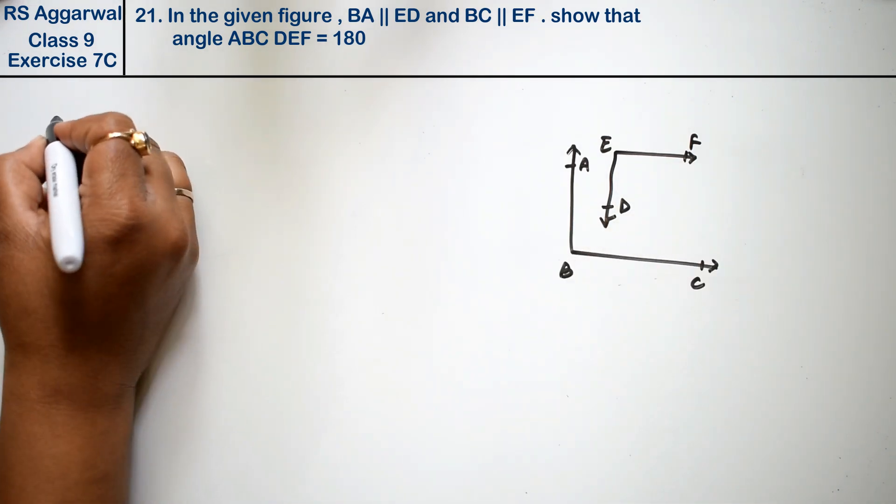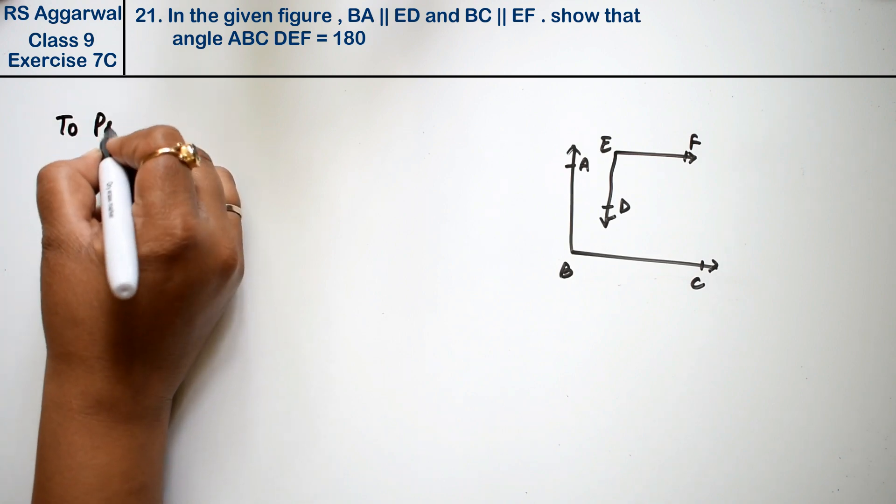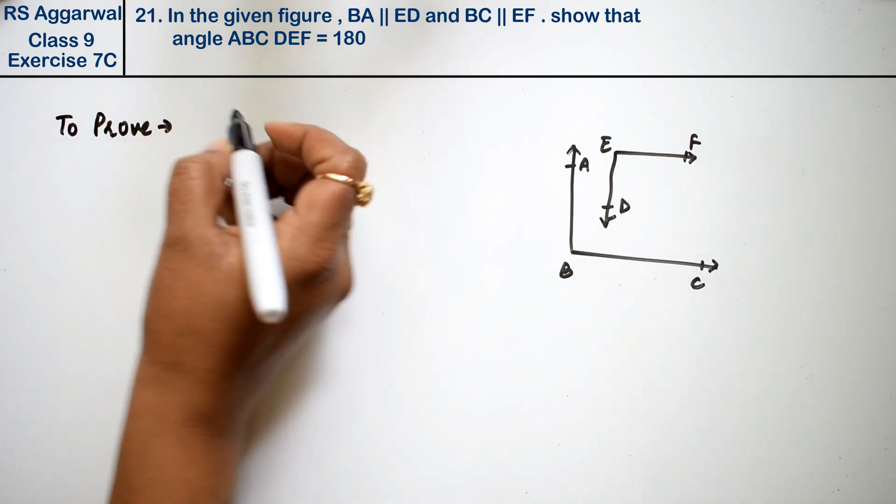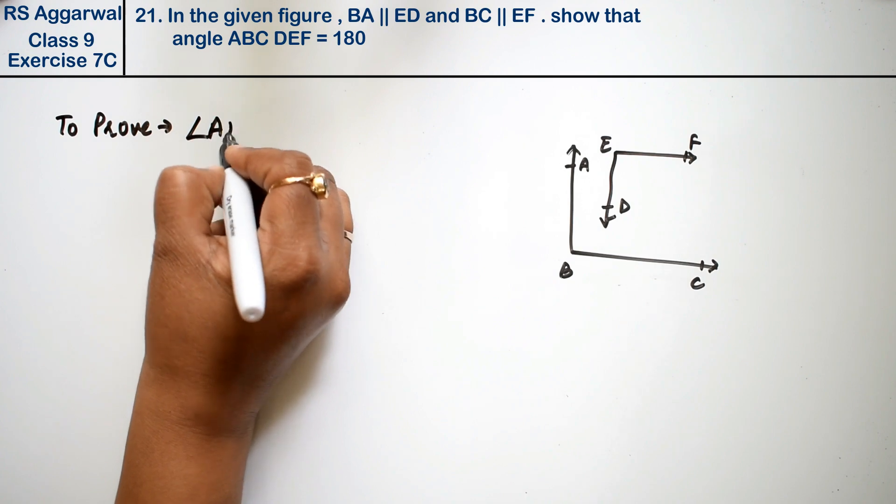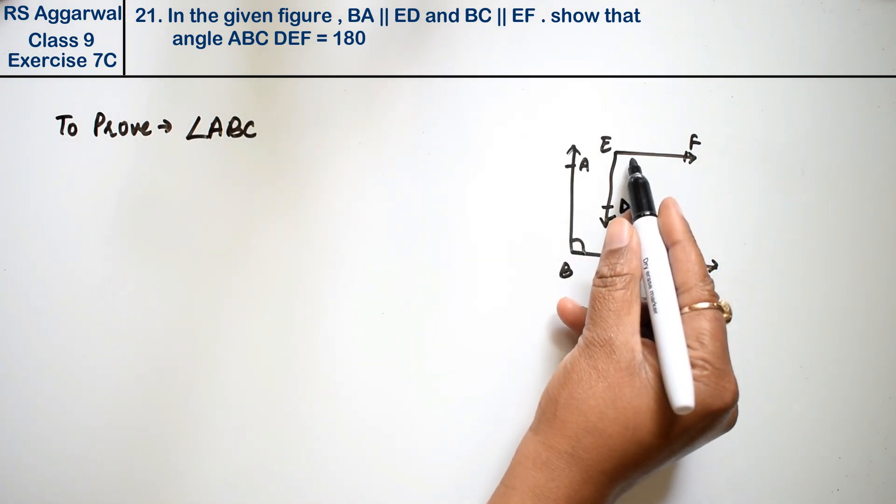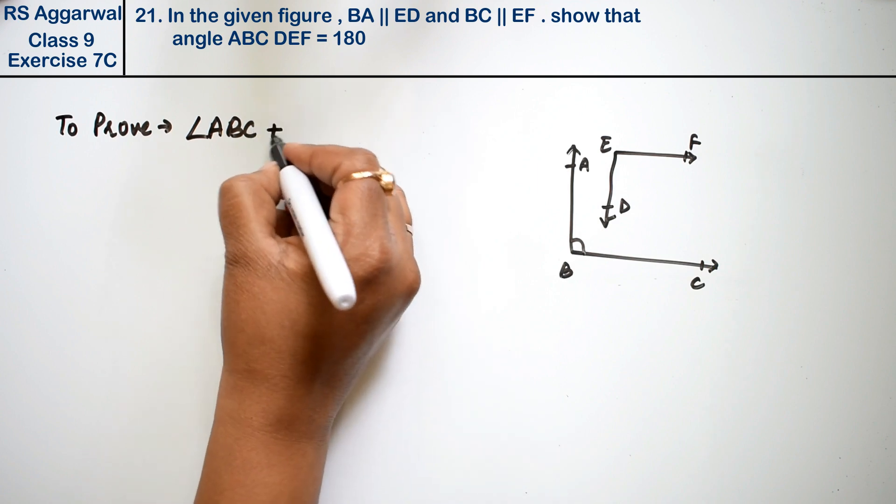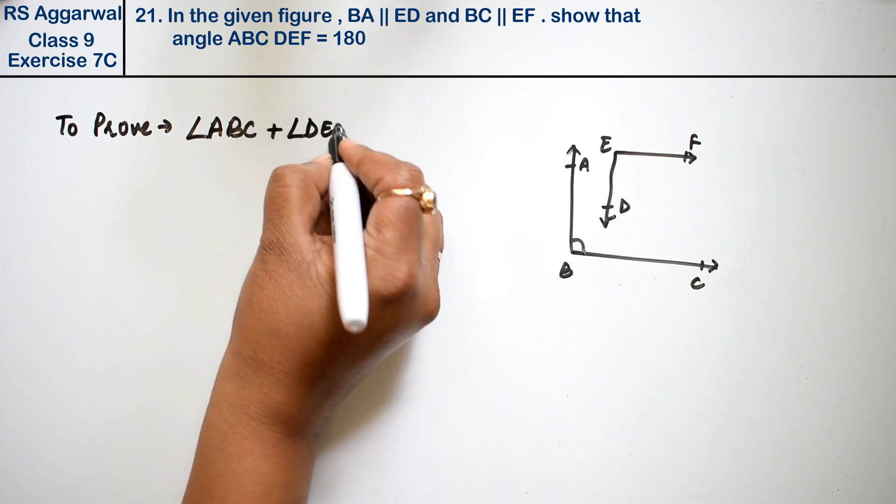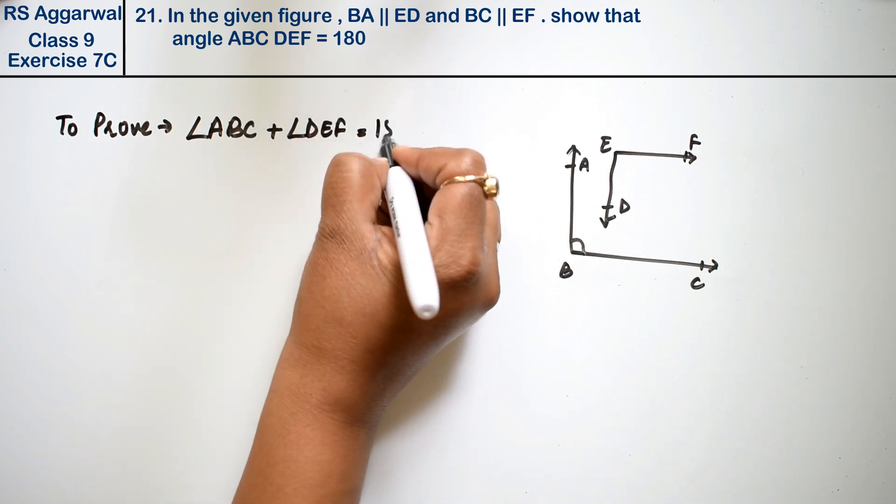What do we need to prove? We need to prove that angle ABC plus angle DEF equals 180 degrees.